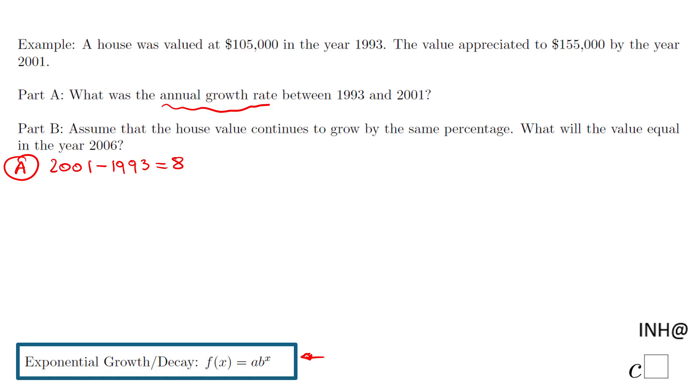In our case, the actual value of the house equals the initial value—I'll call it A₀, which is $105,000—times b to the t, where t is the number of years.